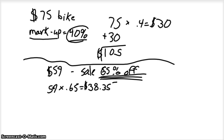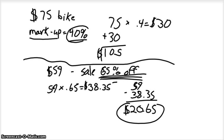So 65% of the price is $38.35. And that's money. So we're getting, you're saving $38.35. So now we have to do 59 take away $38.35, which gets a price of $20.65. And that's a steal, $20.65.